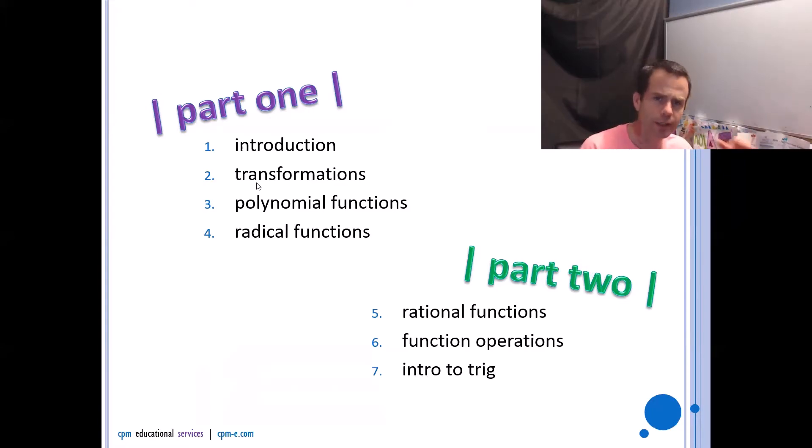In part one we're going to do the introduction which is what this video is all about and then we're going to look at transformations, polynomial functions, radical functions. Then for part two we'll take a look at rational functions, function operations, and we'll start in on trig. So that section of trig we're going to get into radian measure, angles and standard position, and we'll get as far as building the unit circle.